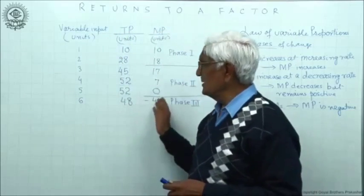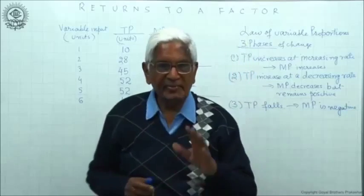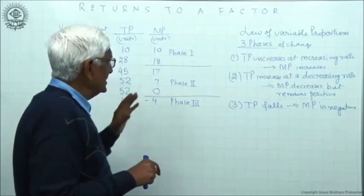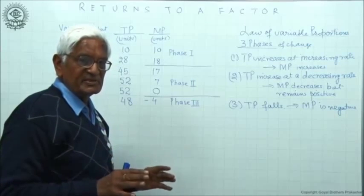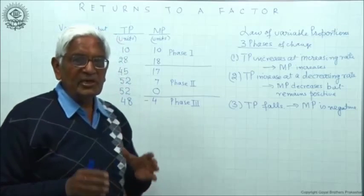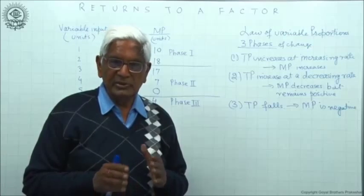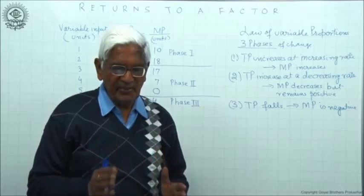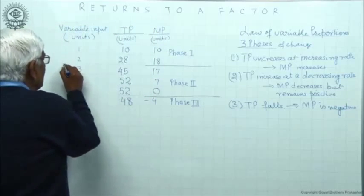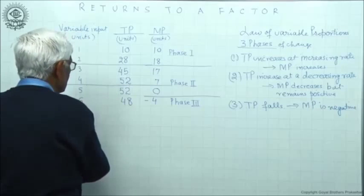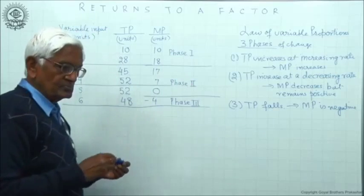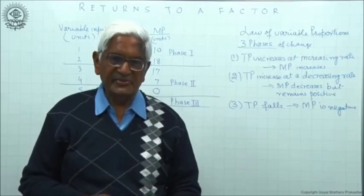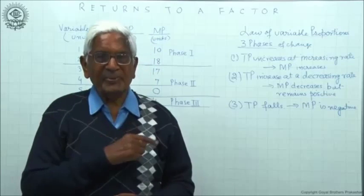Here we are simply pointing out the different phases in which total product changes due to change in only one input. So these are the three phases: 1, 2, and 3. Now you have understood in what manner and why we have taken this. We have to represent these phases on a diagram also.